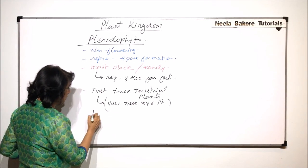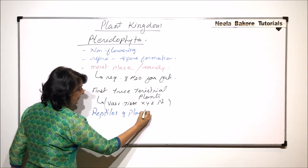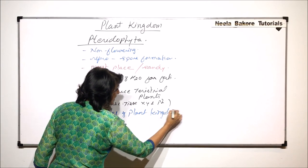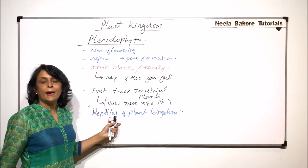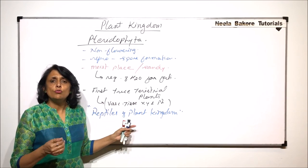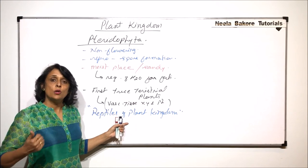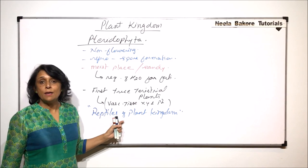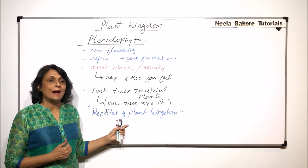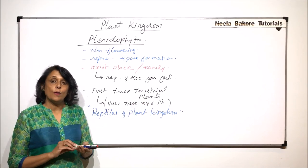Pteridophytes are known as the reptiles of plant kingdom. The reason why they are called reptiles of plant kingdom is because amongst animals, reptiles were the first true land animals and they were able to survive outside water for most of the times. And same is the case with pteridophytes. They are the first true land plants, and the reason is they have conducting tissue, that is xylem and phloem.